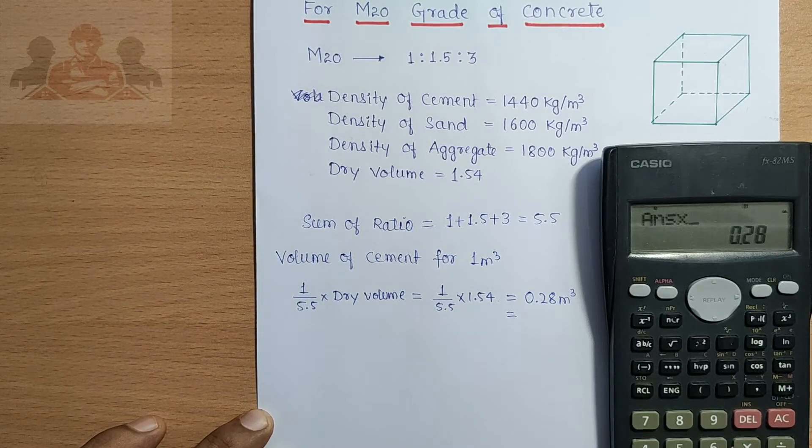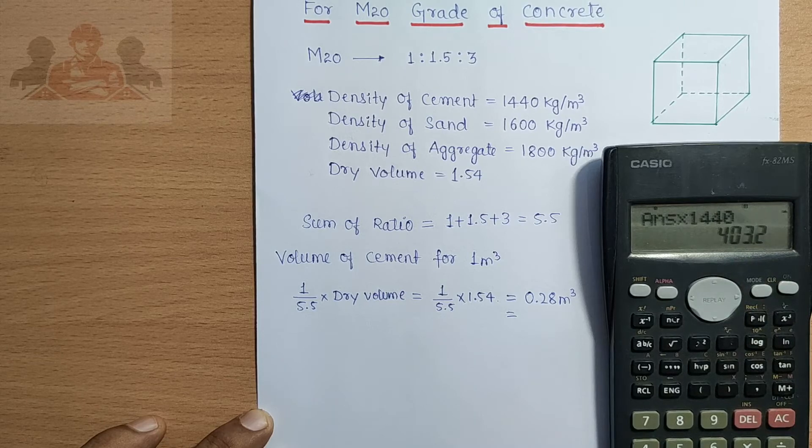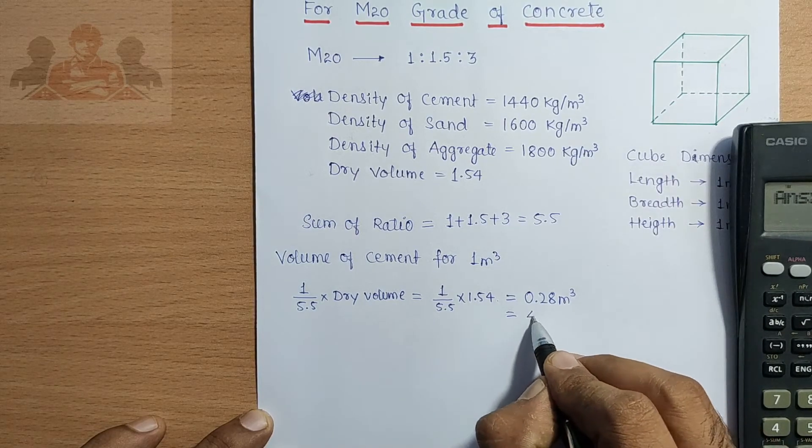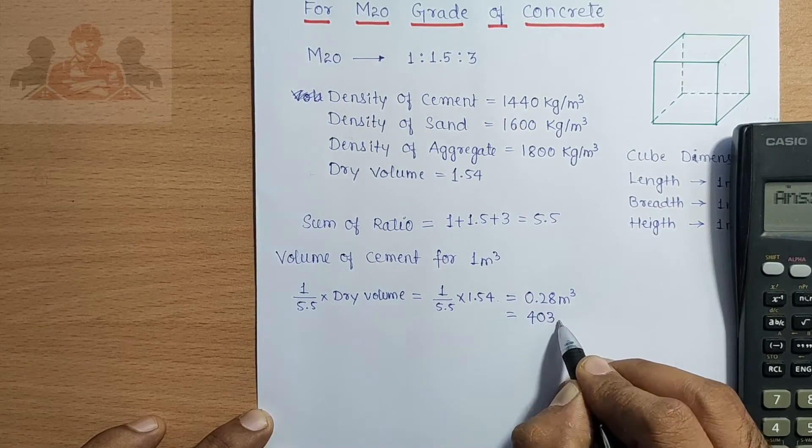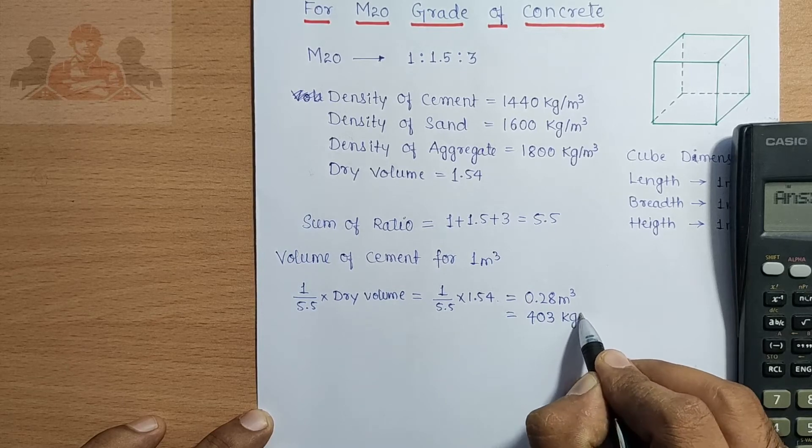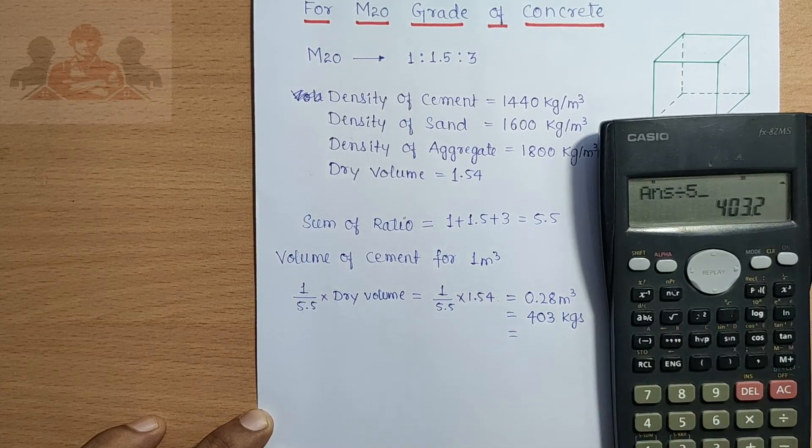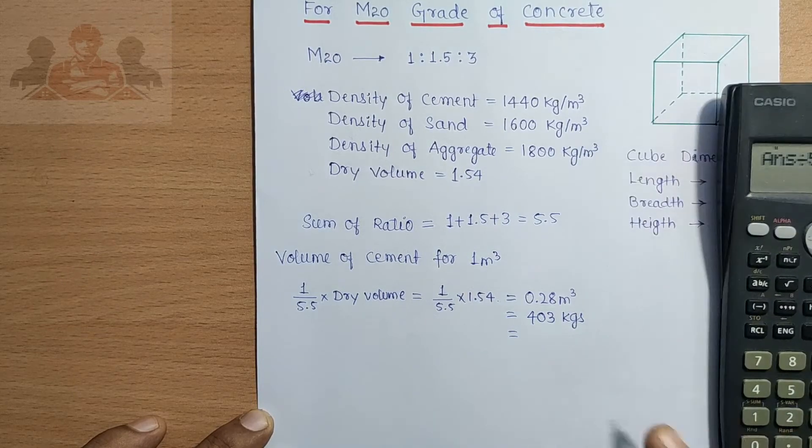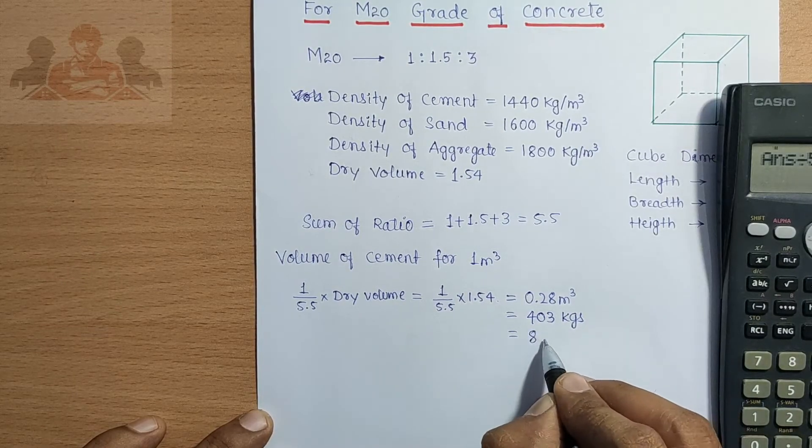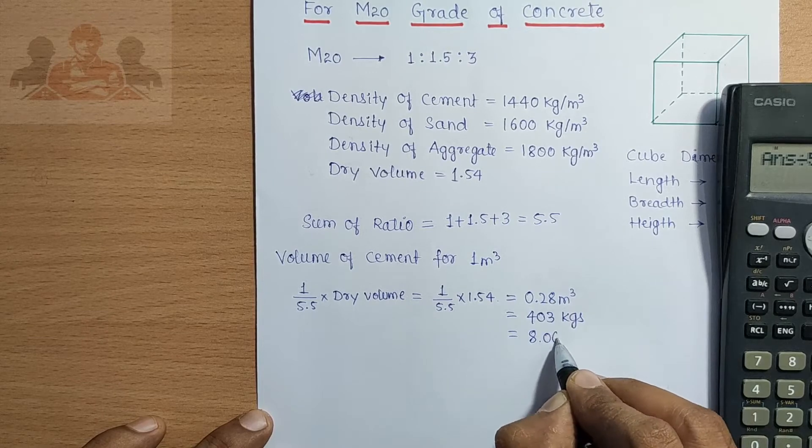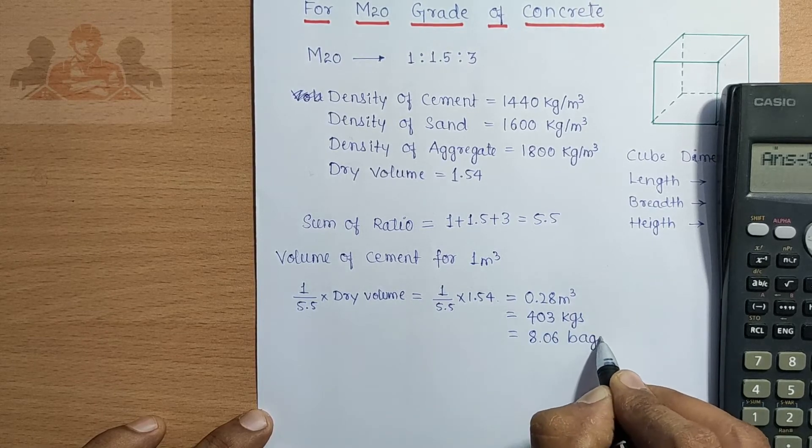Value of cement is 0.26 meter cube into density of cement 1440 kg per meter cube equals 403 kg. Let's convert it in bags by dividing by 50. There are 8.06 bags in 1 meter cube.